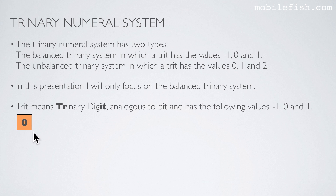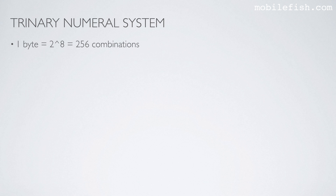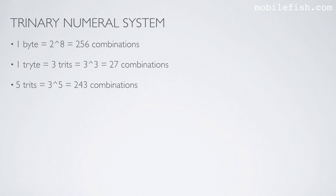This represents a trit. Tryte means trinary byte, analogous to byte. A tryte consists of three trits. This represents a tryte. One byte has 256 combinations. One tryte has three trits, which gives 27 combinations. Five trits has 243 combinations. Five trits is not equal to one byte.